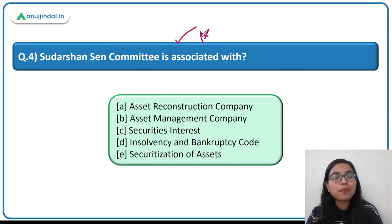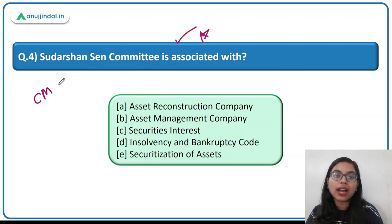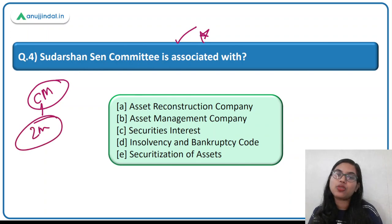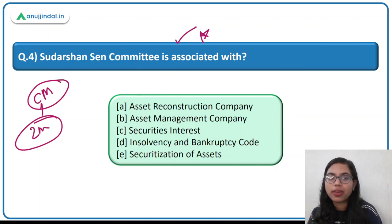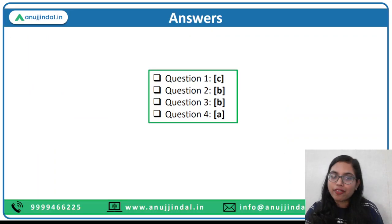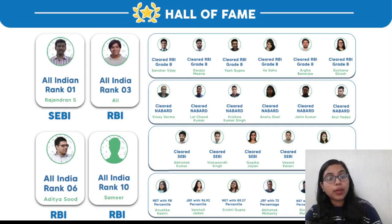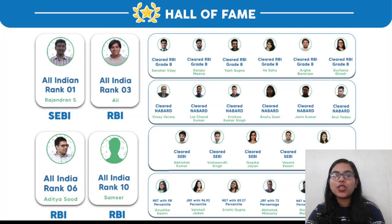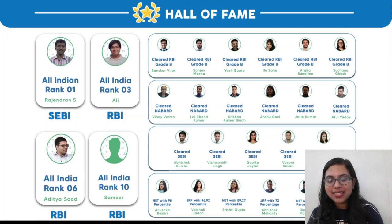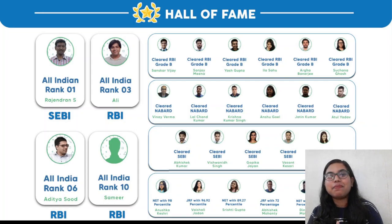A simple question like 'who is the regulator of the capital market' was a two-marker question in the RBI Phase 2 exam. Simple basic questions can also be asked, so never neglect them. Answers have already been provided in this PDF. In case of any doubt, you can always write it down. Keep learning and all the very best. Start preparing — I am there and other teachers are also there for you. Till then, bye-bye.